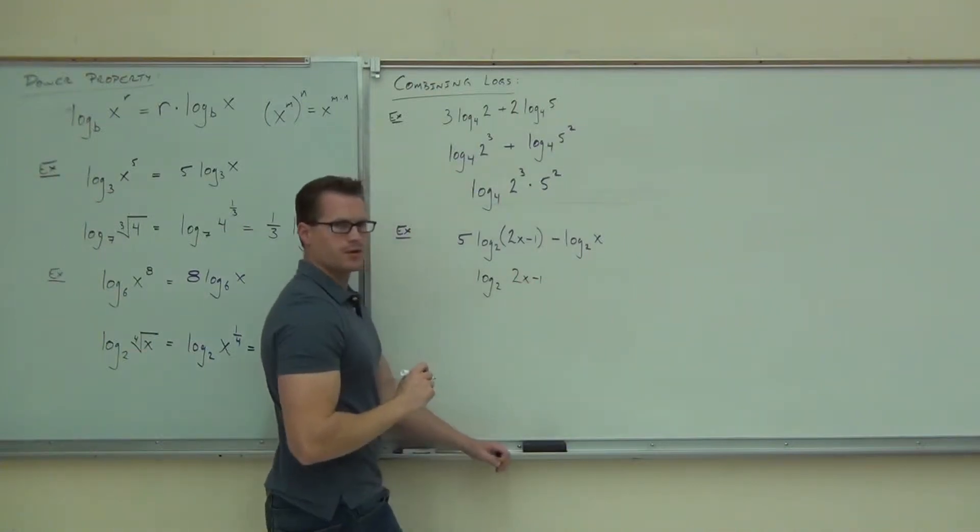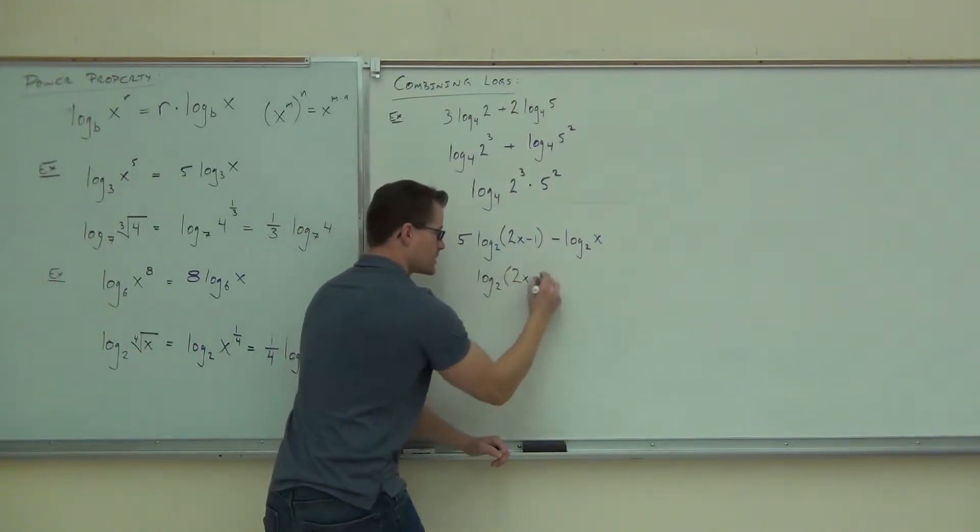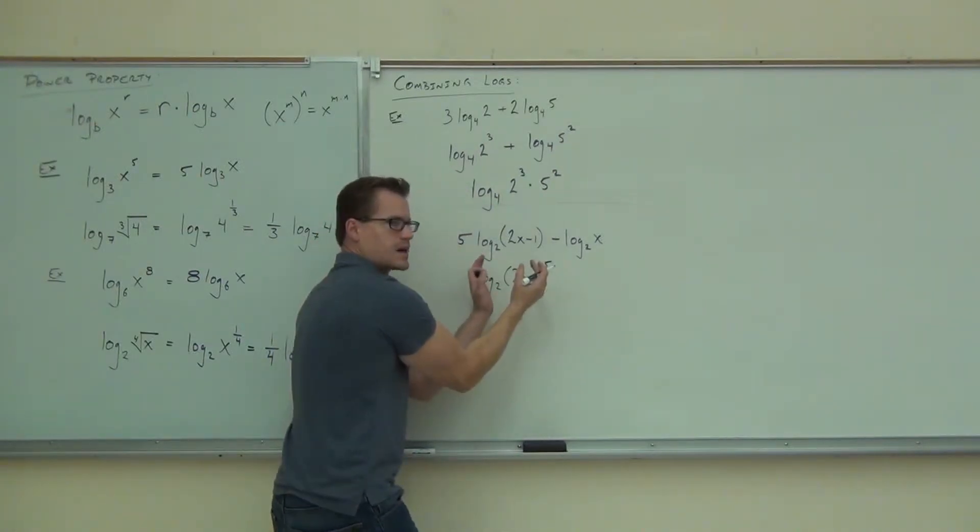2x minus, where do I put the 5? Parentheses. Oh, I still need parentheses, and then where? 5 in the corner, right here. So it's on that entire expression. That's all being raised to the 5th power.